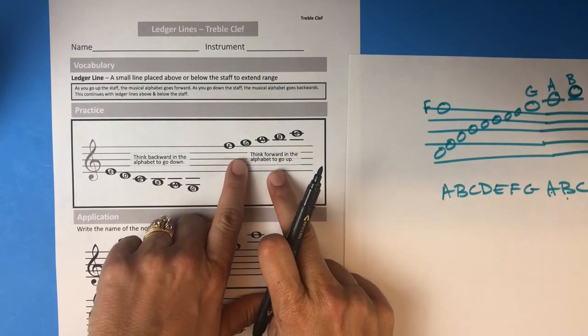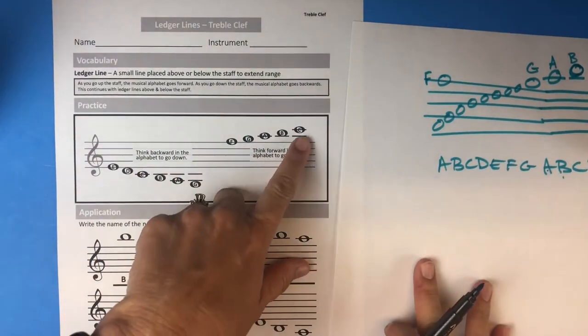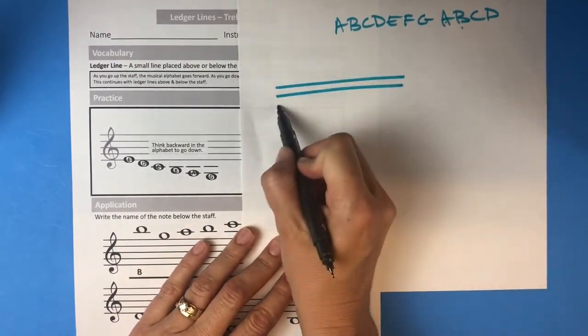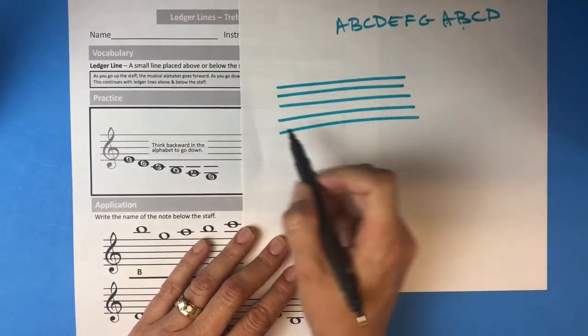Going down it's the same exact thing, you just have to think backwards, so it takes a little bit more brain power.